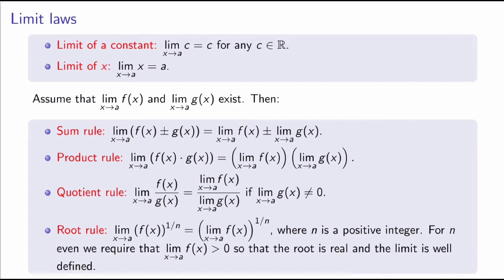The sum rule says that the limit as x goes to a of the sum or difference of two functions is equal to the sum or difference of the limits. The product rule says that the limit of the product of two functions is the product of the limits. Same for the quotient rule: the limit of a quotient is the quotient of the limits, but here I must require that the limit as x approaches a of g of x is non-zero — otherwise I would be dividing by zero.